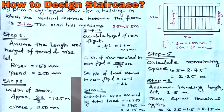Step 1: Assume the length and height of tread and riser. Let riser be 150 mm and tread be 250 mm. These are standard values for a residential or commercial building. The riser may vary from 150 to 175 mm and the tread may vary from 250 to 300 mm. The tread is based on foot length, and the riser of 150 mm is the height so that everyone can comfortably lift their leg and reach the next step.